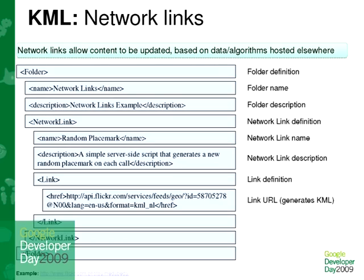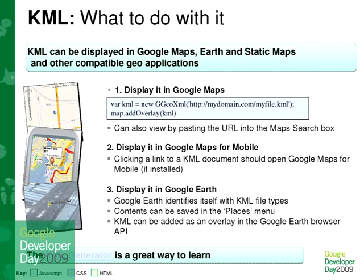Network Links make it possible for you to download first a very basic KML that will then load all the rest of the content progressively. Once you build your KML, you can display it in Google Maps, in Google Earth, in Google Maps for mobile — which means that if you have a link with a KML and you click on it on your mobile with Google Maps for mobile installed, you will be able to load the KML as well.